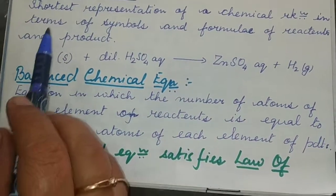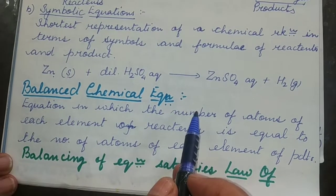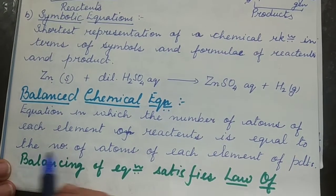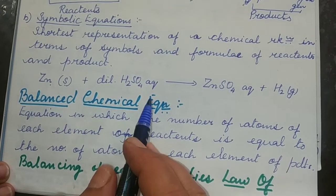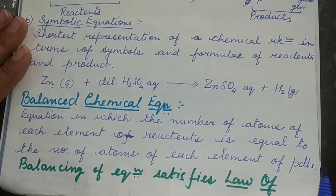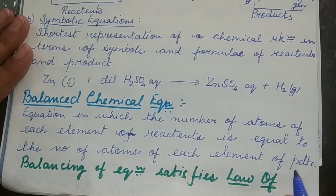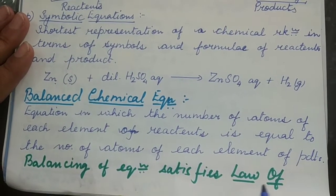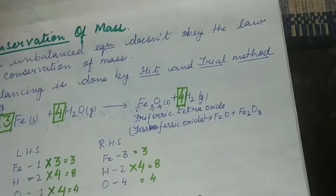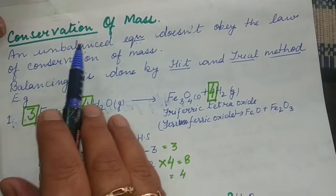Now that we have studied symbolic equations, we should know the importance of balancing a chemical equation. A balanced chemical equation is one in which the number of atoms of each element on the reactant side is equal to the number of atoms of each element on the product side. We need to balance a chemical equation because it satisfies the law of conservation of mass. An unbalanced chemical equation doesn't obey the law of conservation of mass. Balancing is done by the hit and trial method.